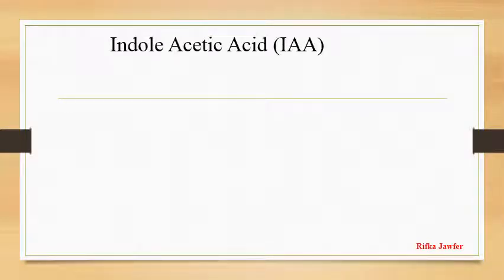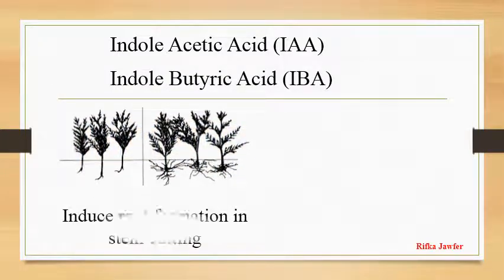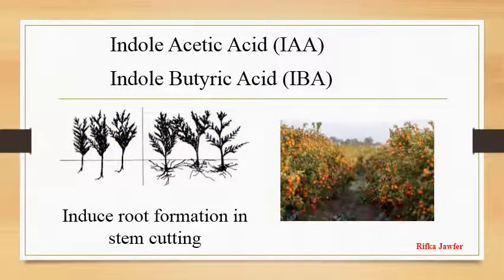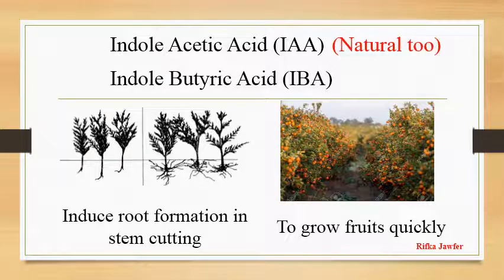Indoleacetic acid and indolebutyric acid are used to induce root formation in stem cutting and to get fruits quickly. Remember that indoleacetic acid is also a natural growth substance found in plants.